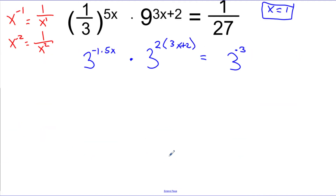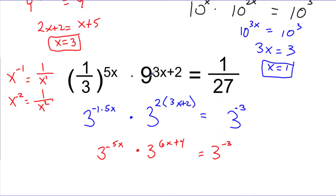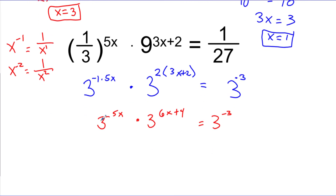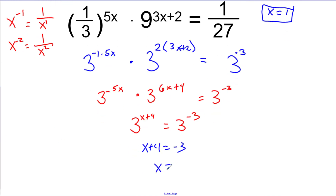Now I simplify: the first term becomes 3 to the negative 5x, and distributing the exponent on the second term gives 3 to the 6x plus 4. The right-hand side stays as 3 to the negative 3. Adding the exponents on the left: negative 5x plus 6x is x, so this becomes 3 to the x plus 4 equals 3 to the negative 3. Setting exponents equal: x plus 4 equals negative 3, so x equals negative 7.